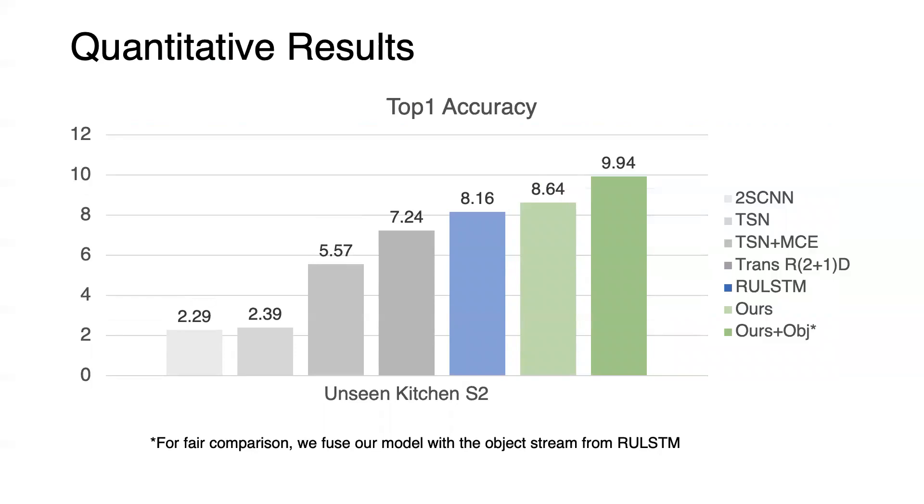On unseen action classes, our model alone outperforms RULSTM by a notable margin. Fusing with the object stream can further boost the performance.